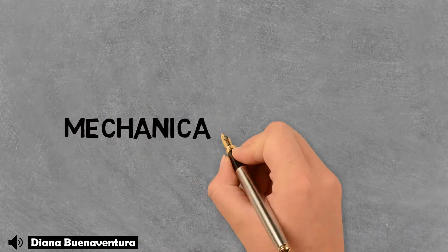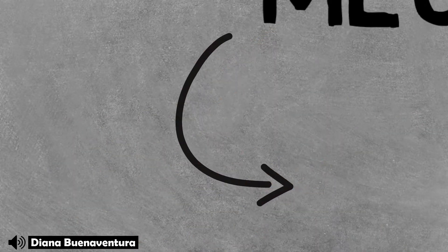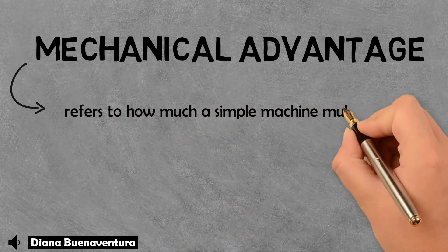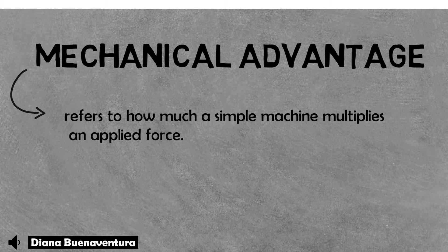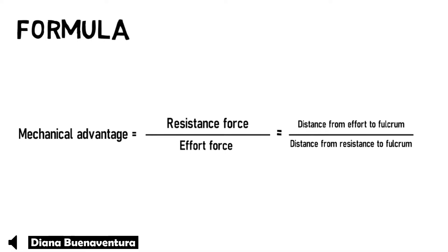All simple machines produce mechanical advantage. Mechanical advantage refers to how much a simple machine multiplies an applied force — in simpler terms, how much they make work easier. The formula shows that mechanical advantage equals the ratio of the effort to the load, as well as the distance from the effort to the fulcrum over the distance from the load to the fulcrum.